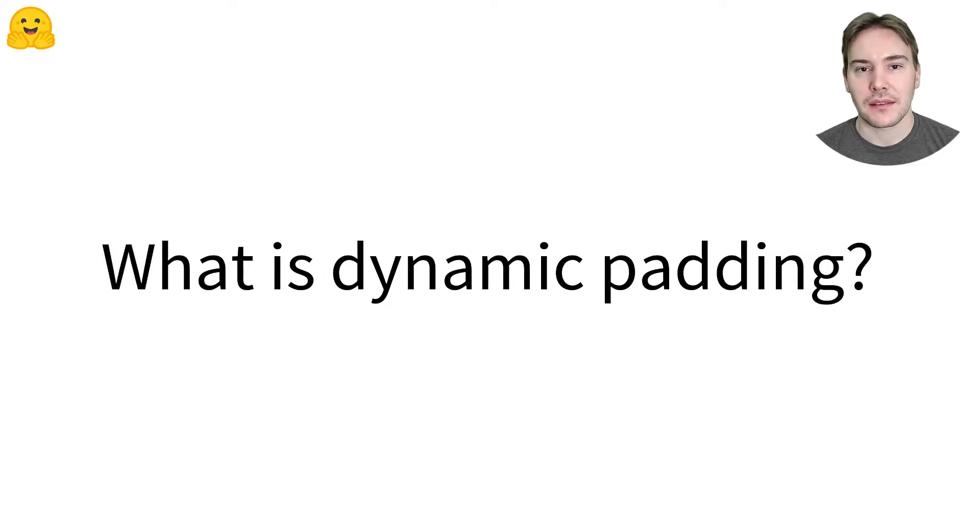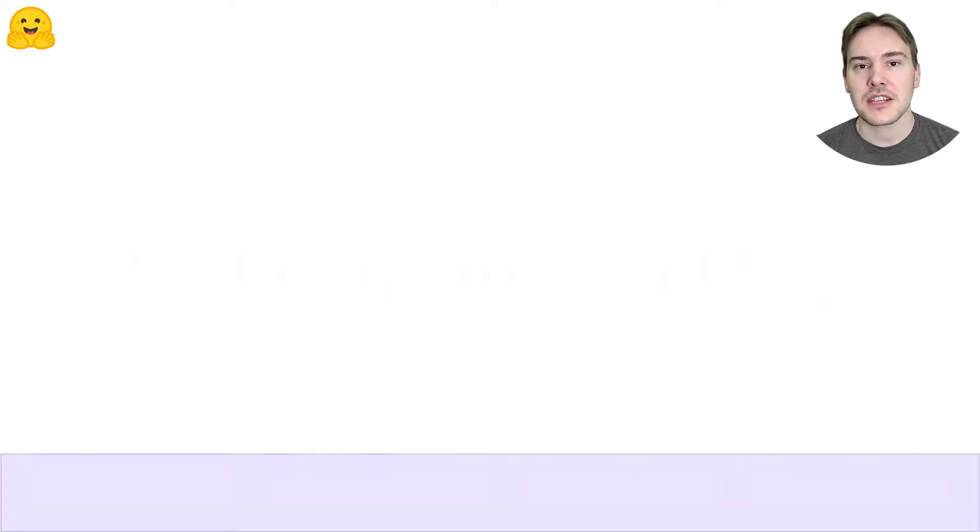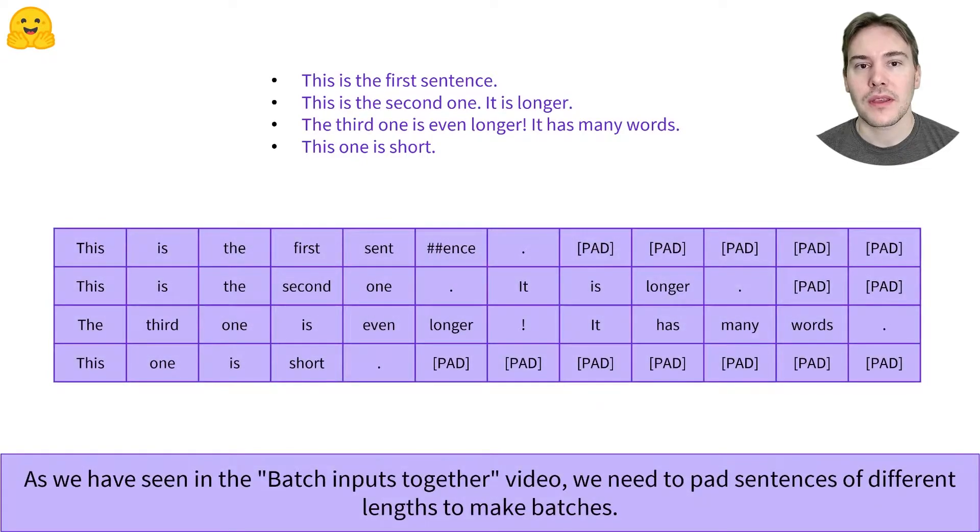What is dynamic padding? In the Batching Inputs Together video, we have seen that to be able to group inputs of different lengths in the same batch, we need to add padding tokens to all the short inputs until they are all of the same length.